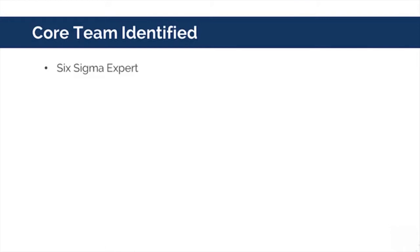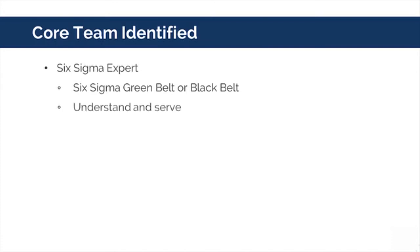The second member of the core team is the Six Sigma expert. A Six Sigma expert is preferably a Six Sigma green belt or black belt. They understand Six Sigma methodology and serve as liaison between the Six Sigma black belts, master black belts, and the project team. A Six Sigma expert also has the ability to interact with other subject matter experts in different fields, for example finance and human resources, who may be involved in providing expertise whenever required.